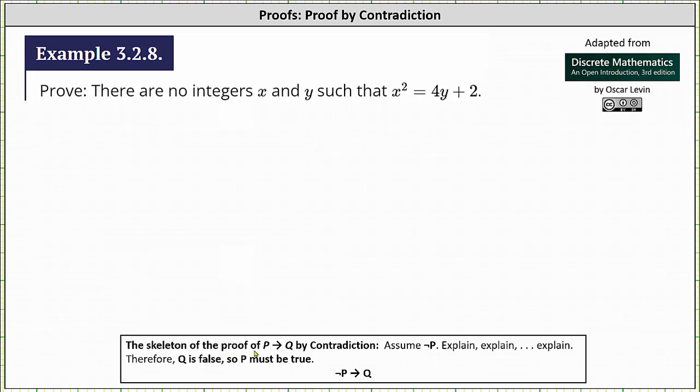In general, the skeleton of a proof of if P then Q by contradiction is to assume not P, explain, explain, explain, therefore Q is false, indicating P must be true.